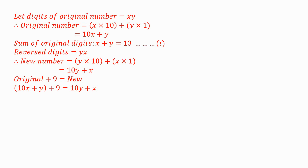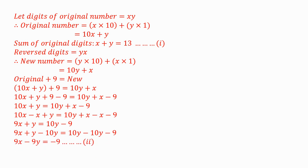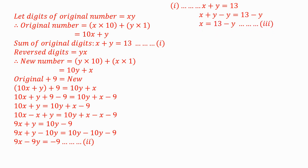We substitute: 10X plus Y plus 9 equals 10Y plus X. We rearrange the equation and put the like terms together — moving the 9, then moving X to the right-hand side, and finally moving 10Y — so our linear equation is 9X minus 9Y equals negative 9. We label that as Equation 2. From Equation 1, X plus Y equals 13, we rearrange to express X in terms of Y: X equals 13 minus Y — Equation 3.